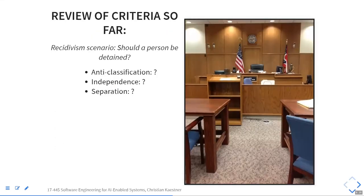In the recidivism scenario, we want to predict whether somebody will commit another crime — a risk score. What approach would you use: anti-classification, independence, or separation? Anti-classification means not using gender or race. Independence means the percentage of people being released is the same across gender and race. Separation means the percentage of mistakes we're making is the same across gender or race.